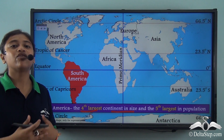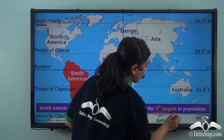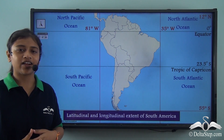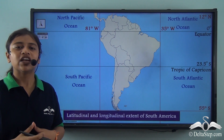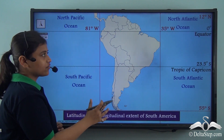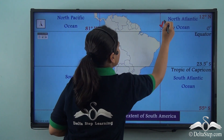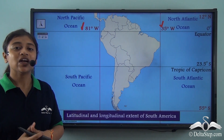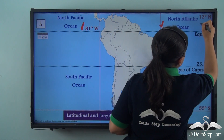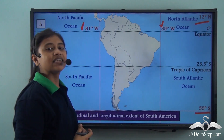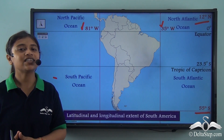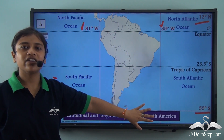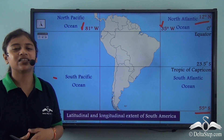As per size, South America is the fourth largest continent in the world. Now let us look at the exact location by examining its latitudinal and longitudinal extent. The continent of South America extends from 35 degrees west to 81 degrees west — that is its longitudinal extent. Its latitudinal extent stretches from 12 degrees north to 55 degrees south. This confirms that the continent lies entirely in the Western Hemisphere and almost entirely in the Southern Hemisphere, with only the northern portion lying in the Northern Hemisphere.